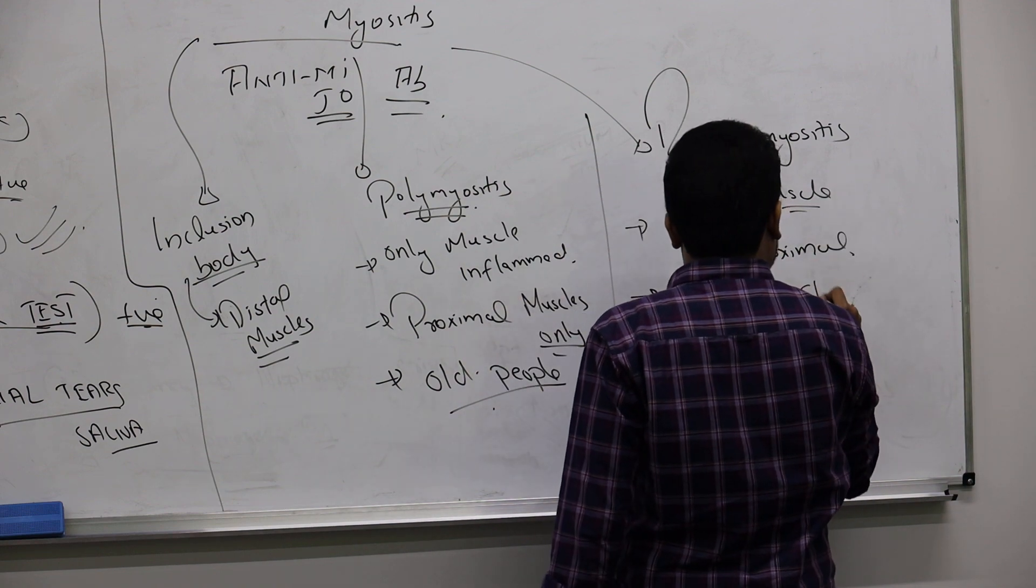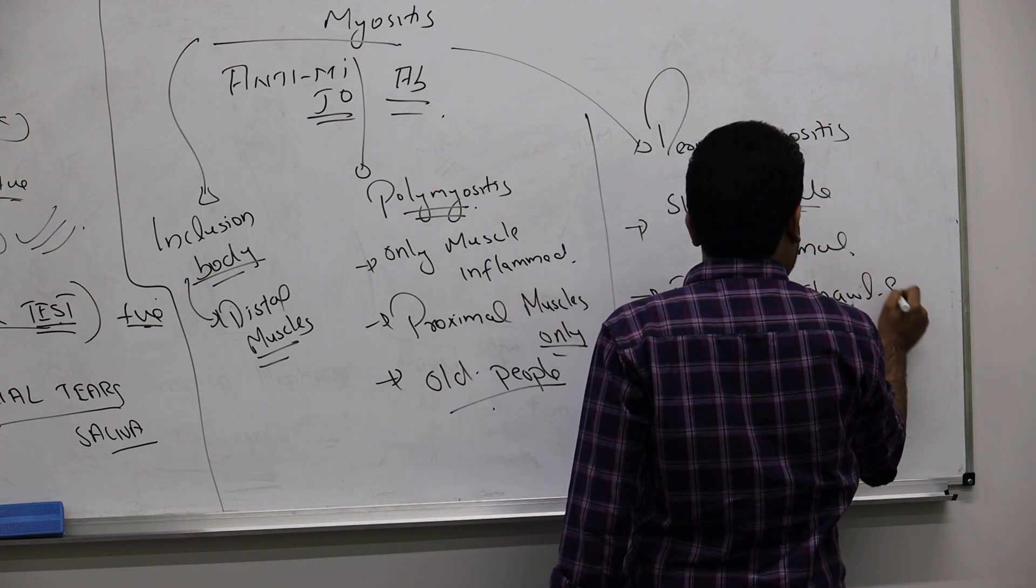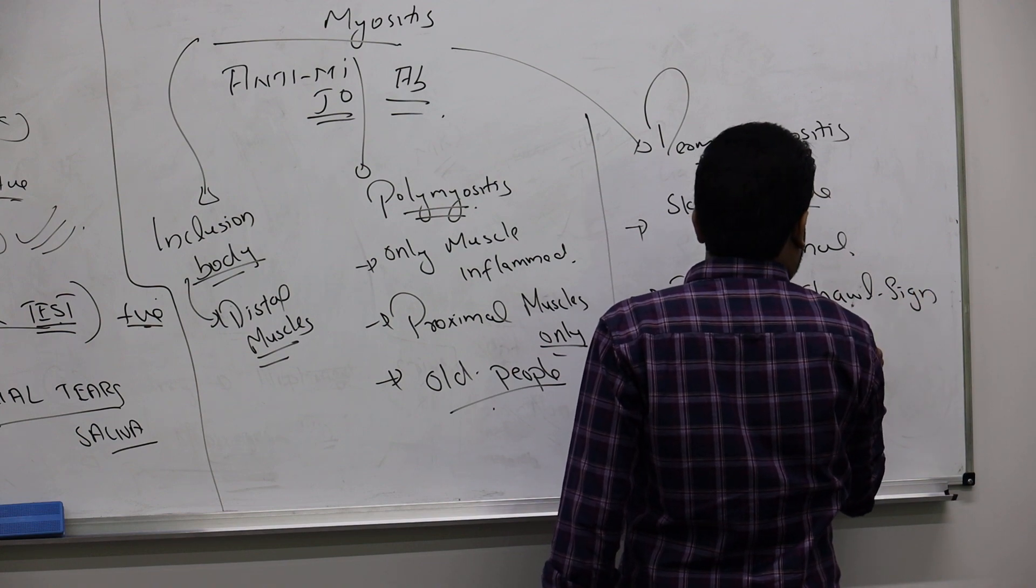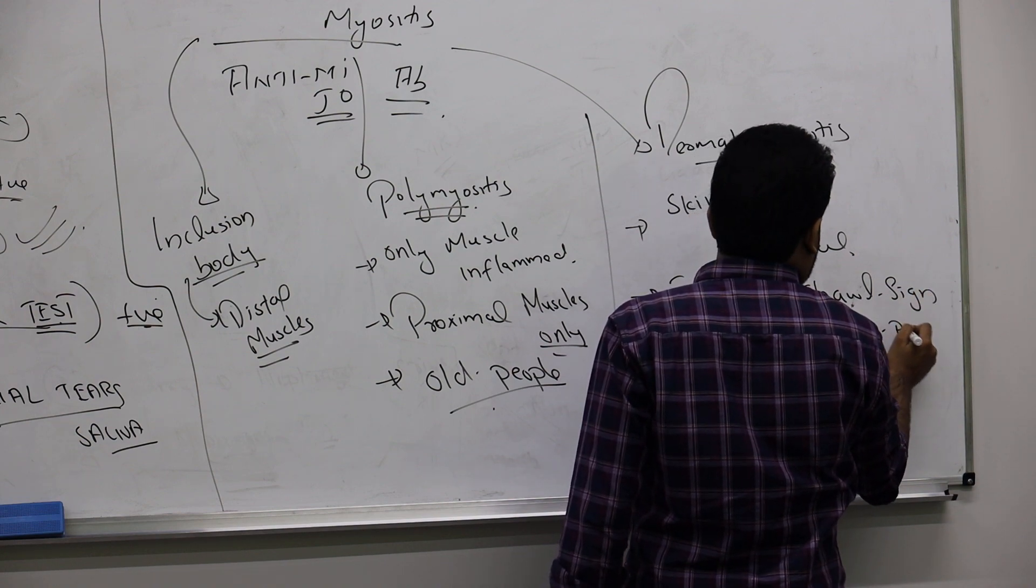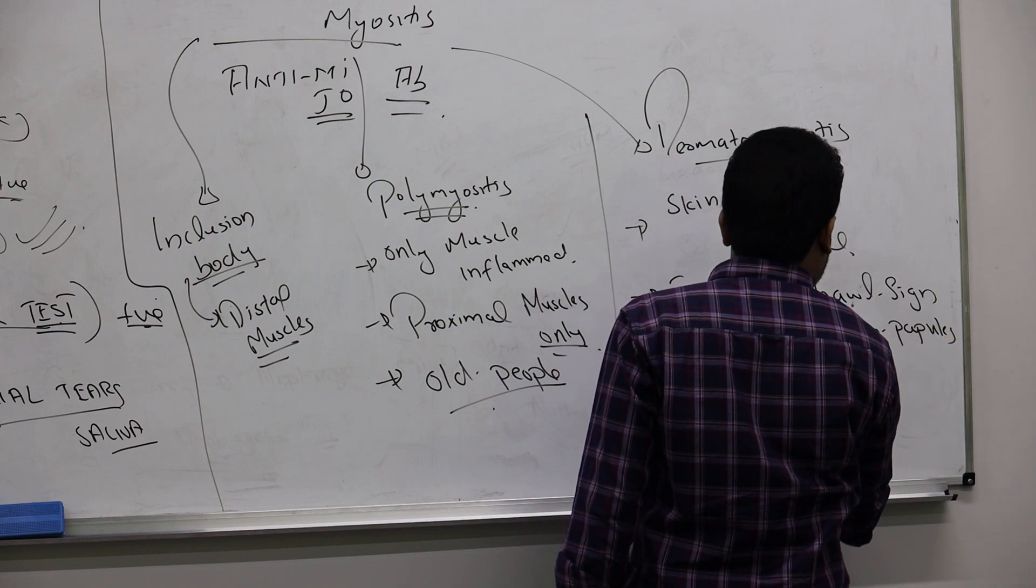You can see a shawl sign, then Gottron papules in the finger, papules, or heliotrope rash.